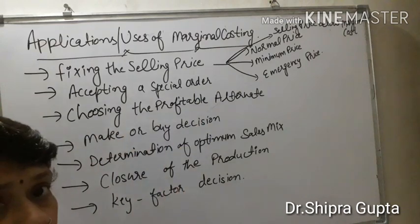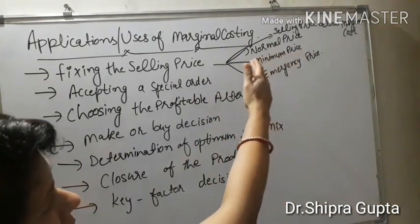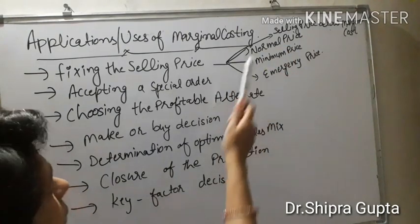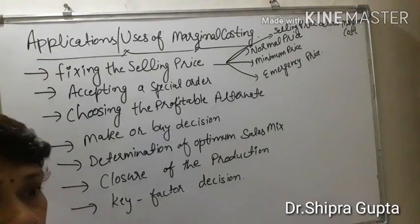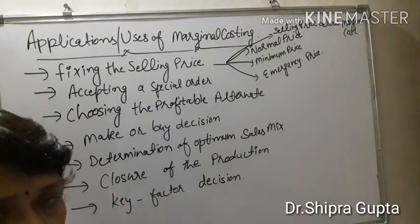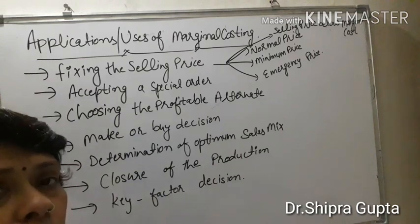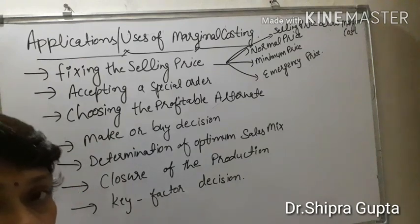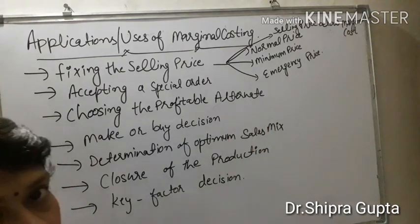Fixing the selling price means the selling price is fixed according to different situations: when selling price is below marginal cost, in normal price, in minimum price, and in emergency price. In normal price, the business should cover its fixed cost, variable cost, and some extra expenses or profit.